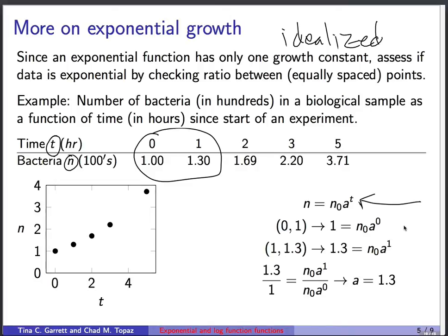And what I'm going to do now is take these two equations and divide the second one by the first one. So on the left-hand side, I get 1.3 divided by 1. On the right-hand side, I got n₀a^1 divided by n₀a^0. You can see that the factors of n₀ cancel out. a^1 over a^0 is just a. And I find that a equals 1.3.